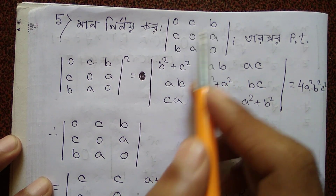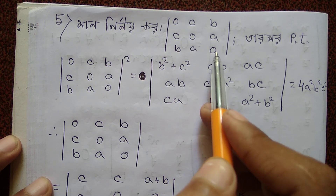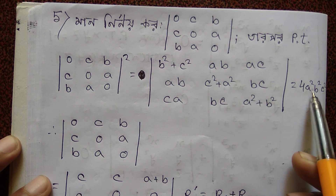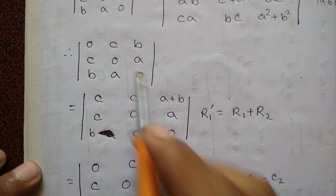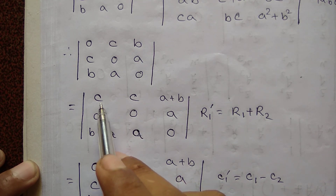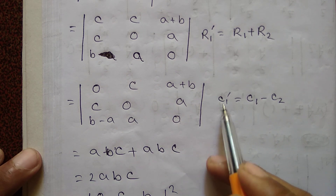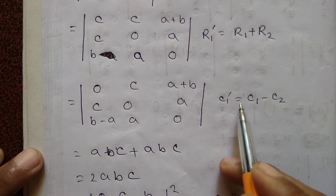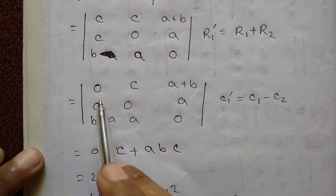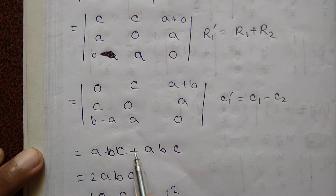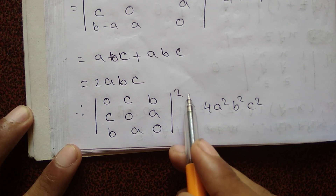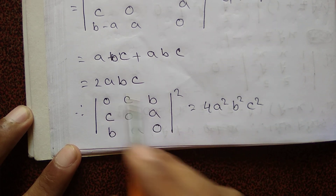Determine the determinant of the matrix with rows: 0, c, b; c, 0, a; b, a, 0. It is equal to 4 a squared b squared c squared. Operation R1 prime equal to R1 plus R2 gives entries c, c, b a plus b. Then C1 prime equal to C1 minus C2 gives first column: 0, c, b minus a. Expanding: we have 2a, b, c and the second derivative equals 4a squared b squared.